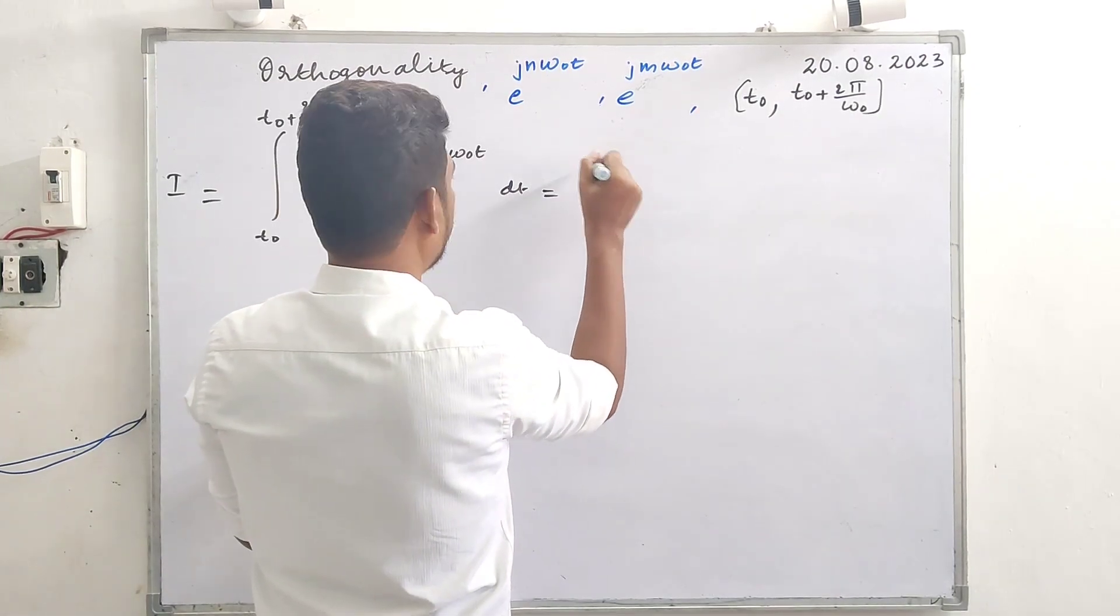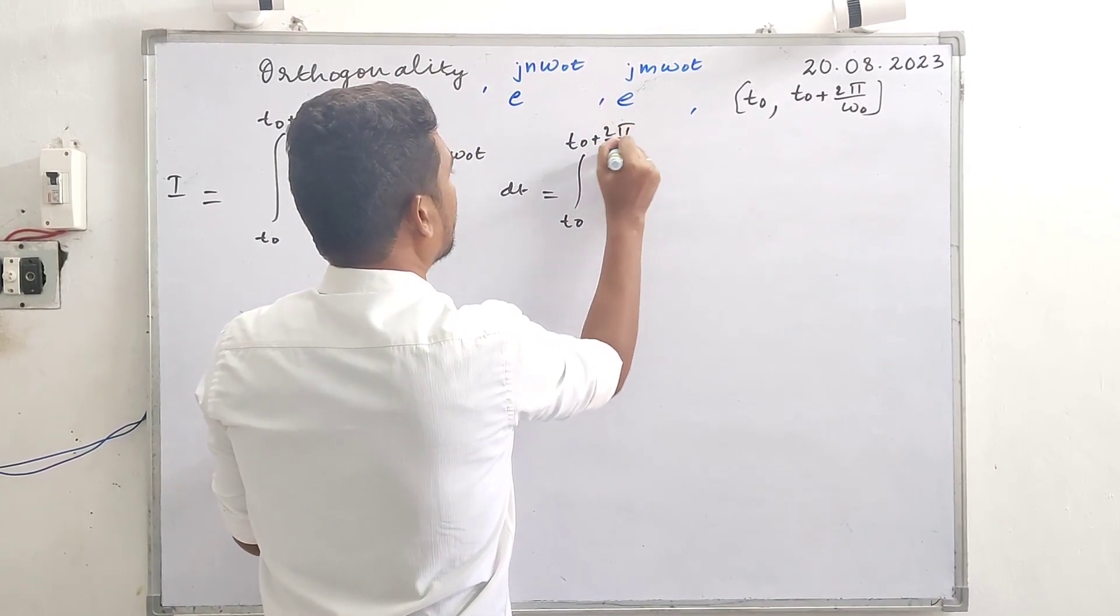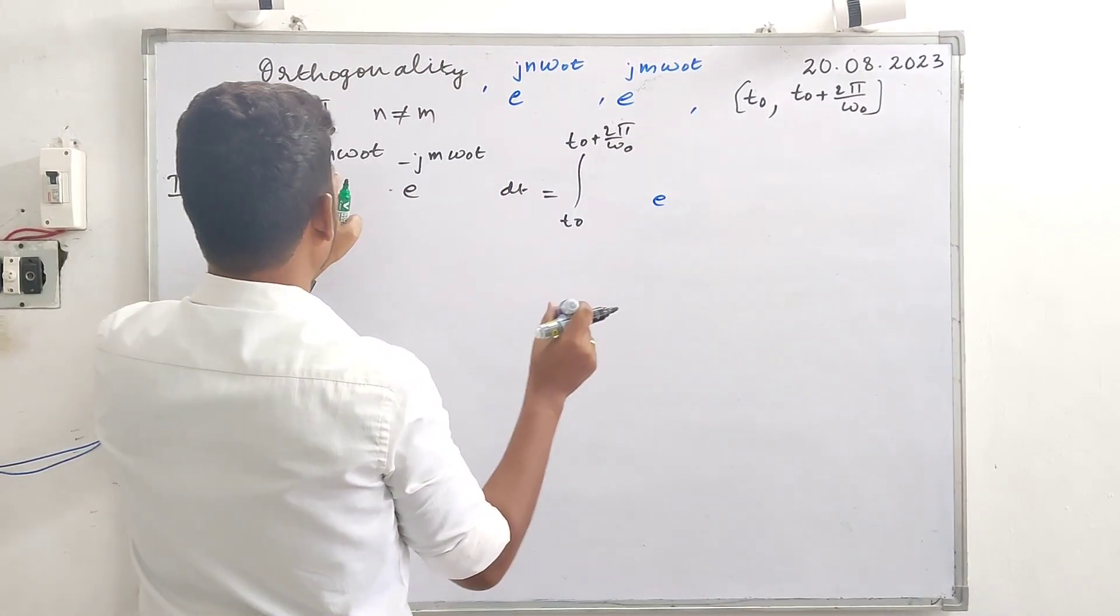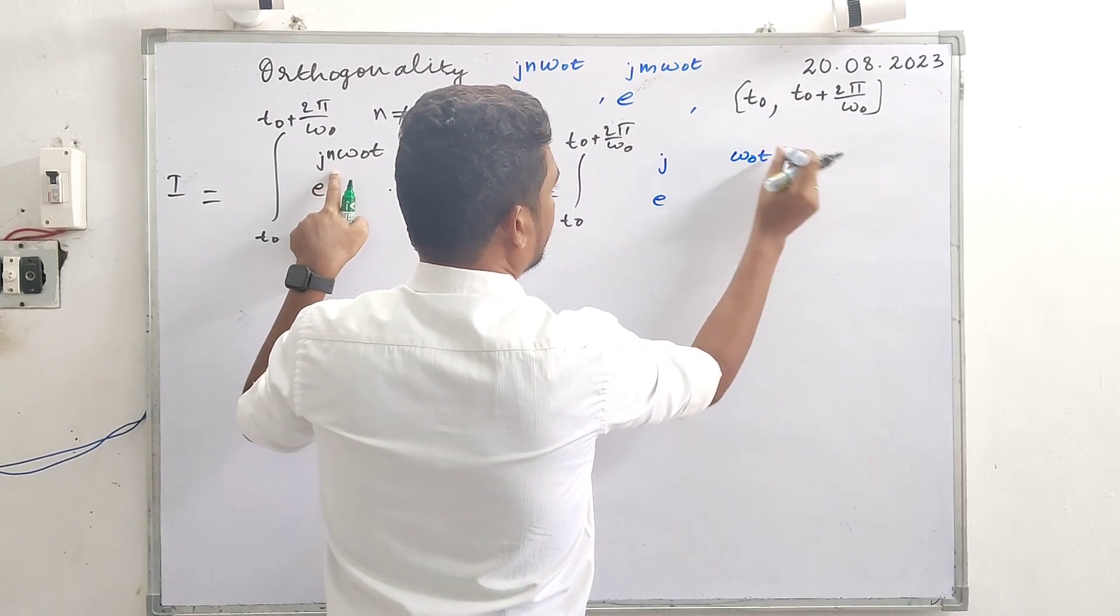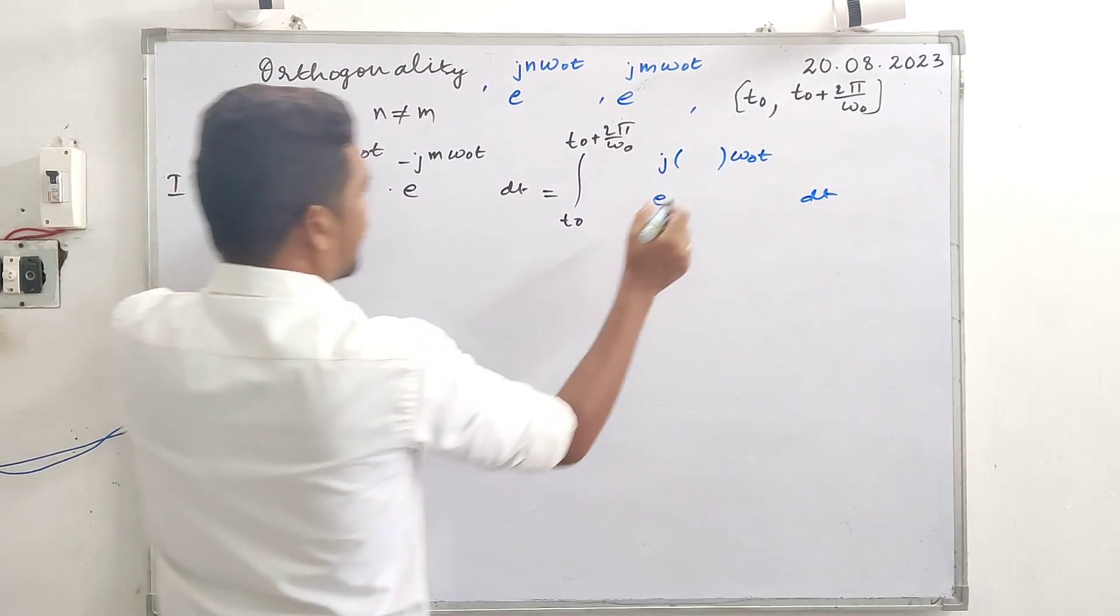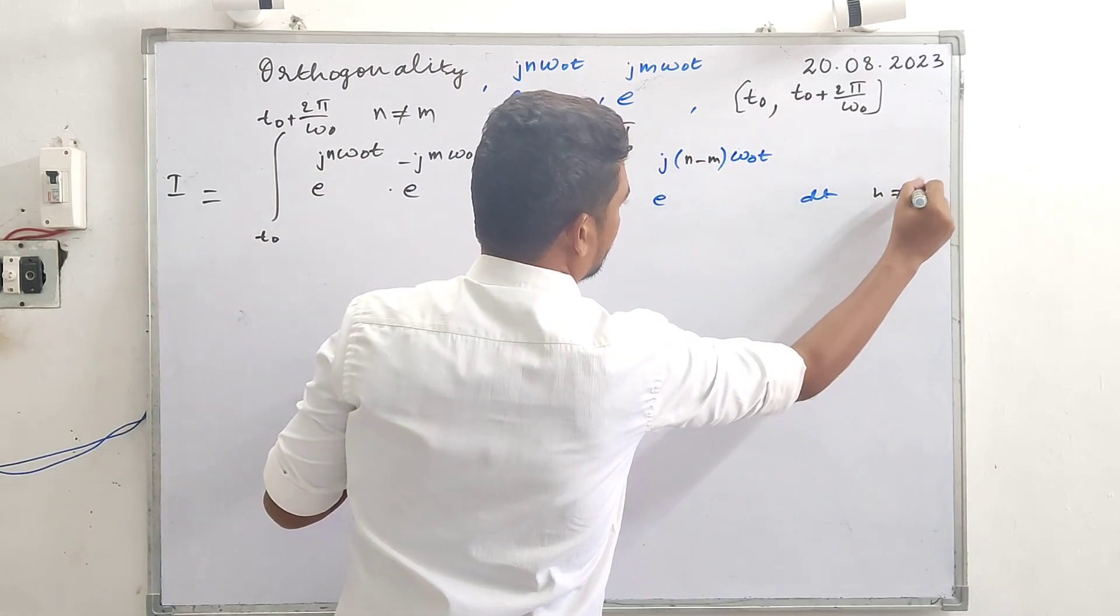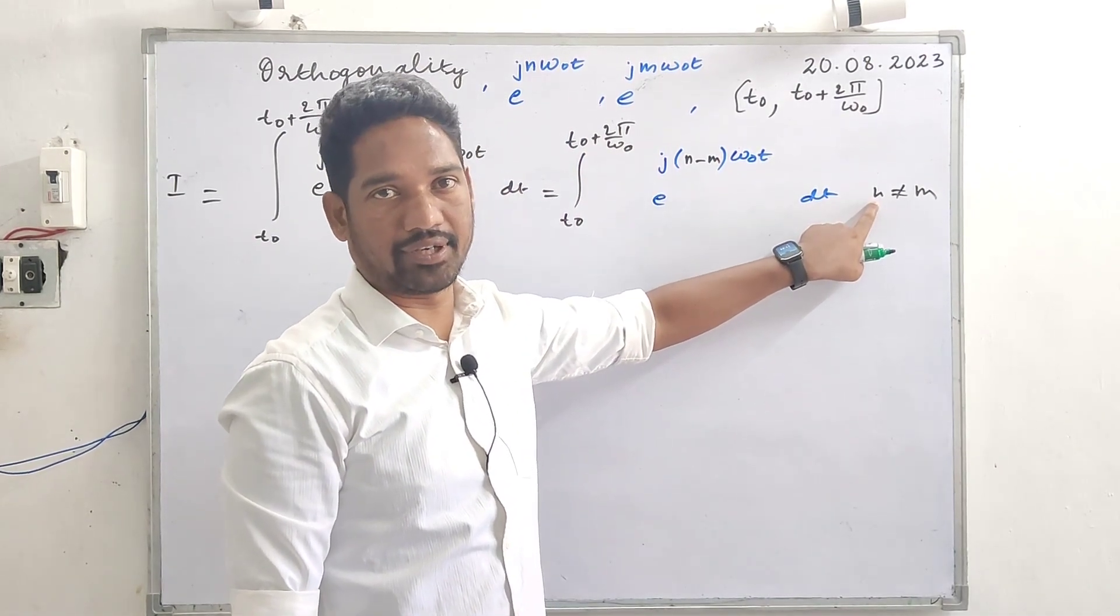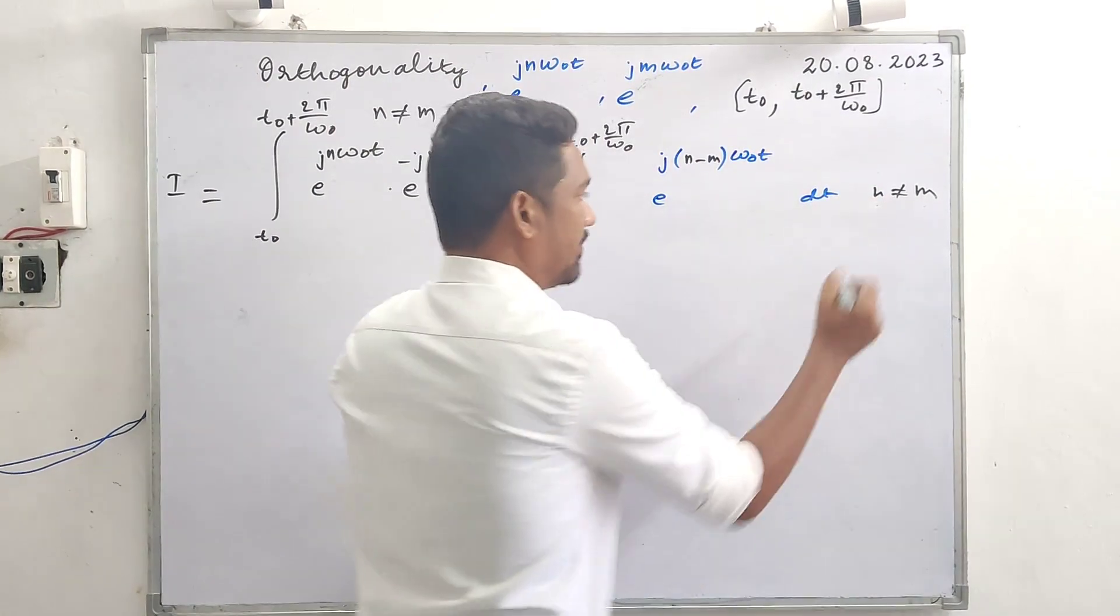So this will lead to integral t naught to t naught plus 2 pi by omega naught exponential j common t, omega naught t common t dt. Inside the braces what do we have: n minus m, n minus m. Remember n not equal to m - these are random integers, integer values for different values of integers, different integer values of n and m. Let it be n equal to 2, m equal to 1, et cetera.